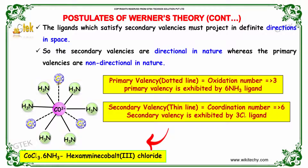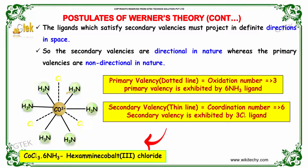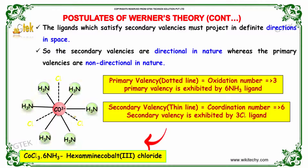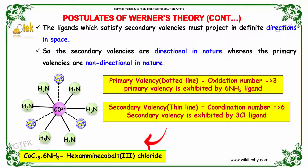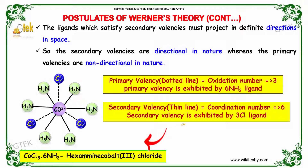The primary valency, shown by the dotted line, indicates the oxidation number of 3. Primary valency is exhibited by 6 NH3 ligands. The secondary valency coordination number is 6. This is how your CoCl3·6NH3 complex is represented. The secondary valency is exhibited by the 3 Cl ligands.